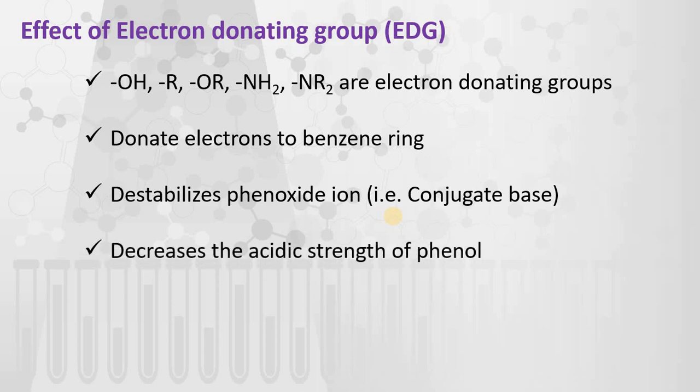Ultimately this decreases the acidic strength of the phenol. As we stated, the stability of the conjugate base decides the strength of the phenol — and here the conjugate base is not stabilized. Therefore the acidic strength of the phenols decreases.